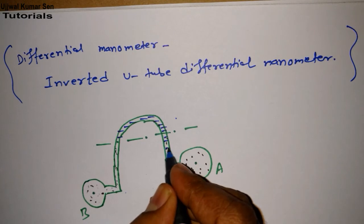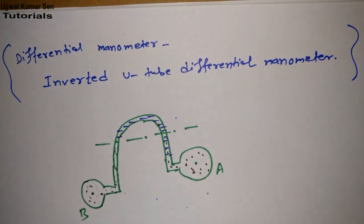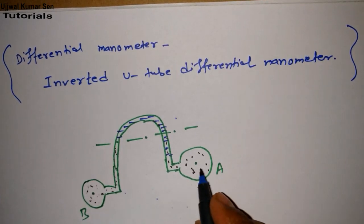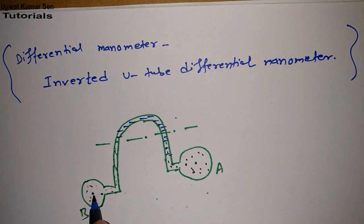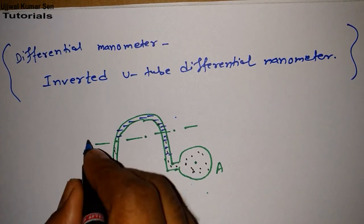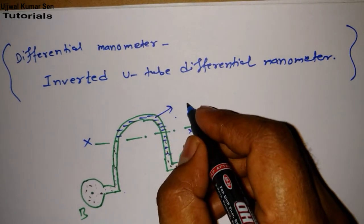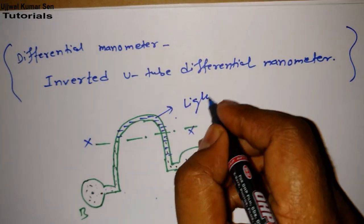Let's say this will come to this position. This one is B and this one is A. At point B and point A we want to find the pressure difference. Let's say this is X, this is a reference line.